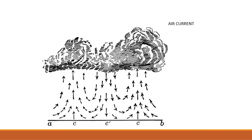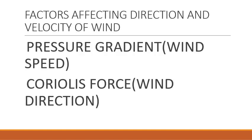The next important term is air current. The vertical or nearly vertical movement of air is called air current. Winds and air currents manage a system of circulation in the atmosphere, about which we are going to study today. The direction and speed of the wind is controlled by a combination of factors.